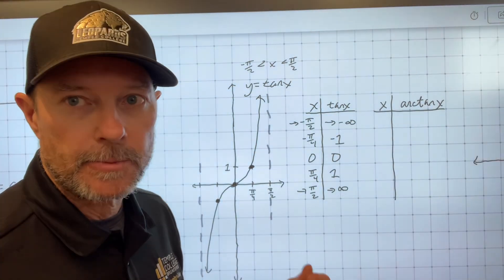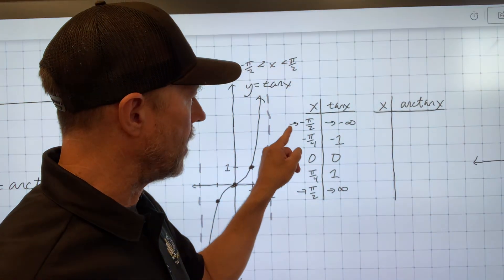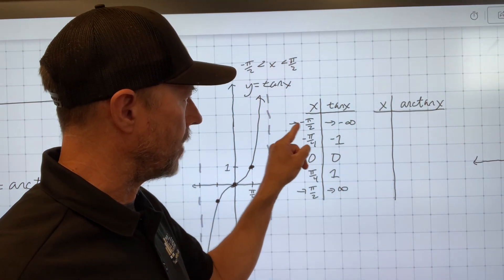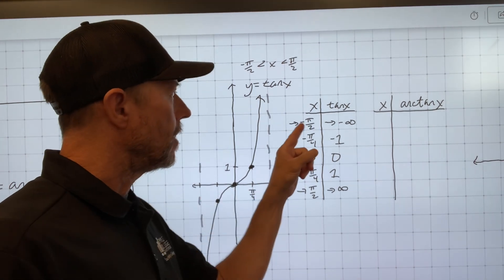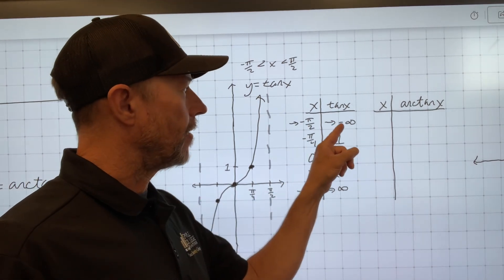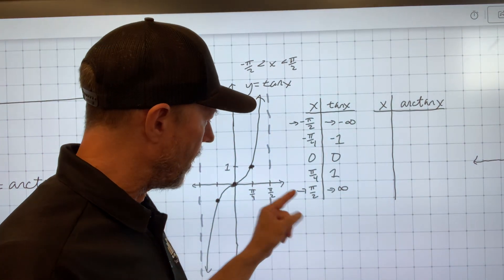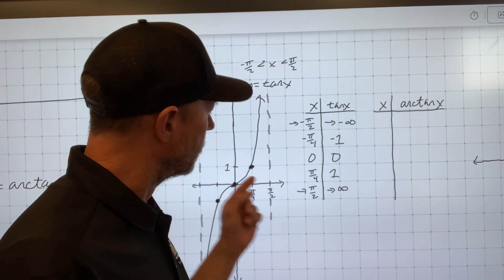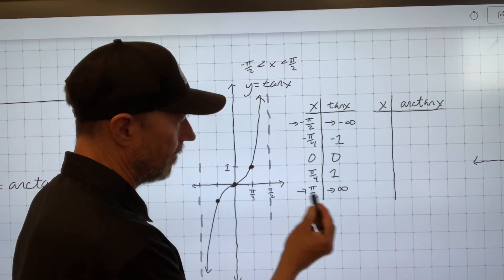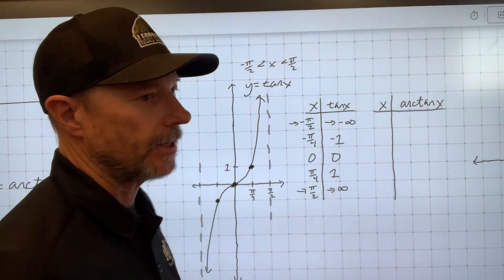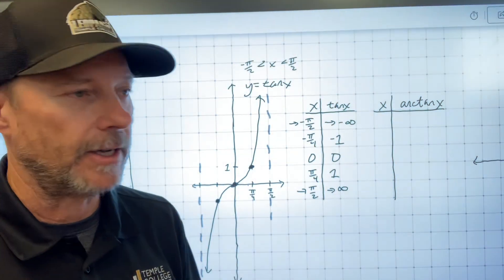Tangent's kind of special because it has the asymptote. Where I have this arrow here, as the domain goes to negative π/2 from the right, the graph goes down to negative infinity. And as the domain values, the input values, go to π/2 from the left, the graph goes up to infinity. You won't have that problem on sine and cosine because they're always defined.